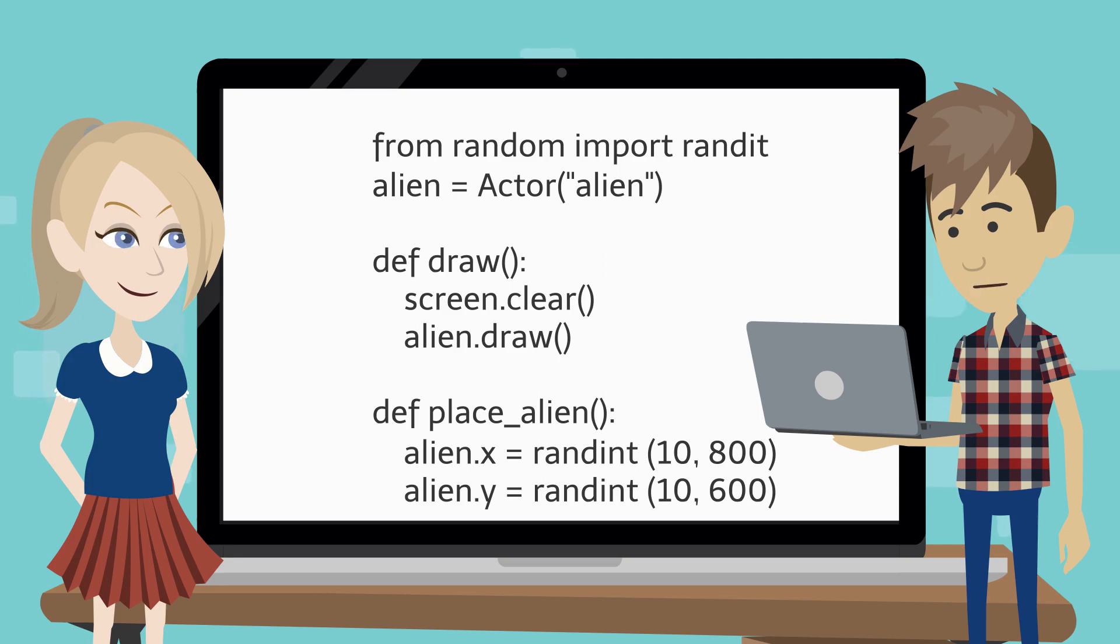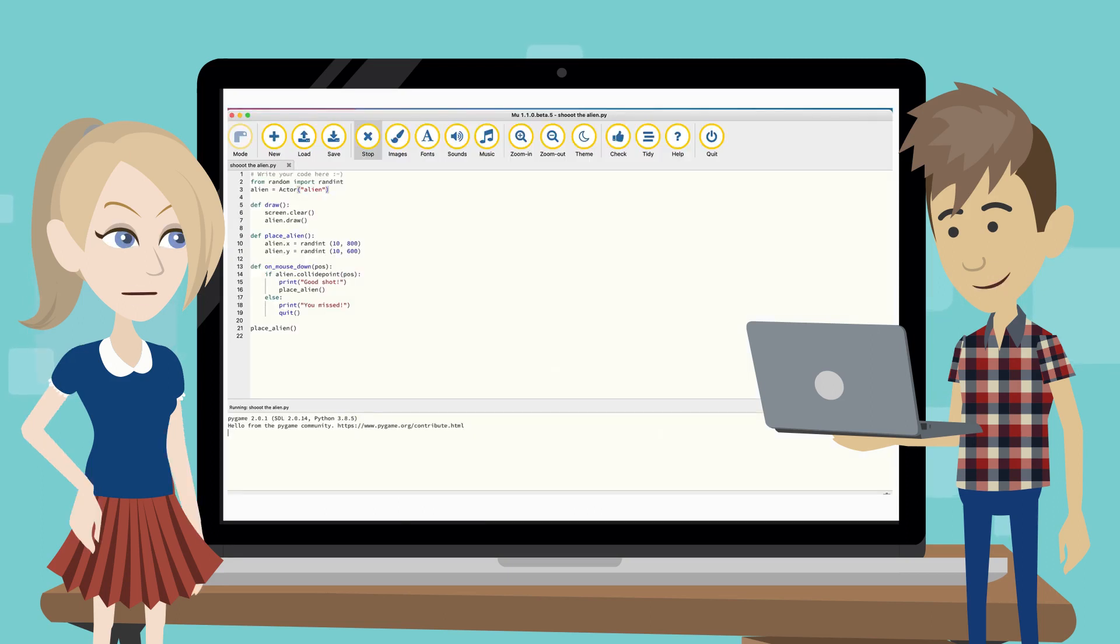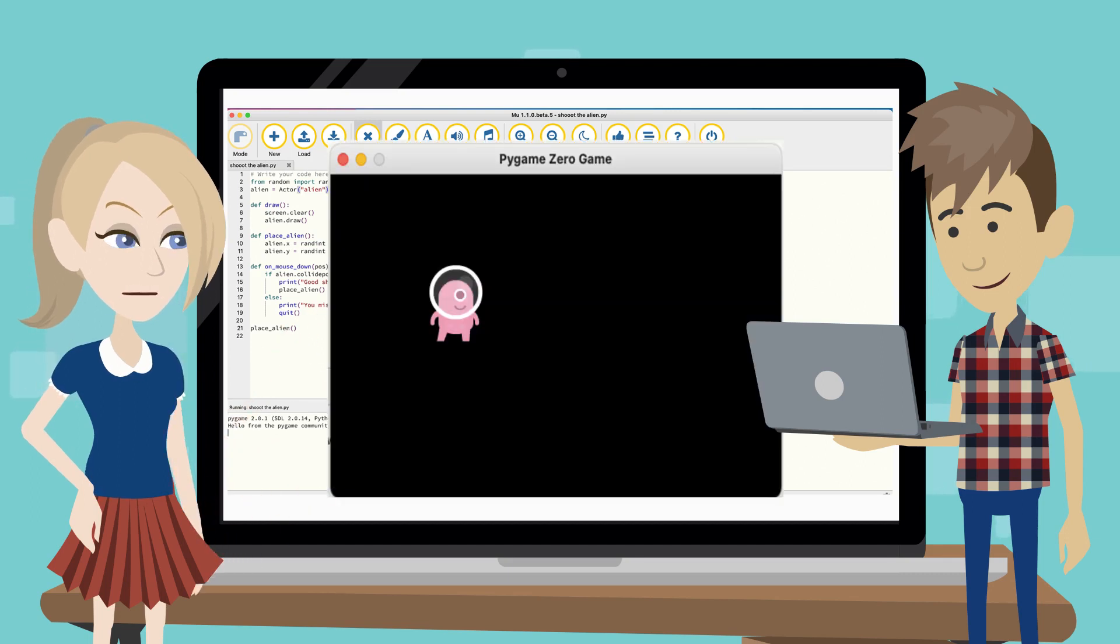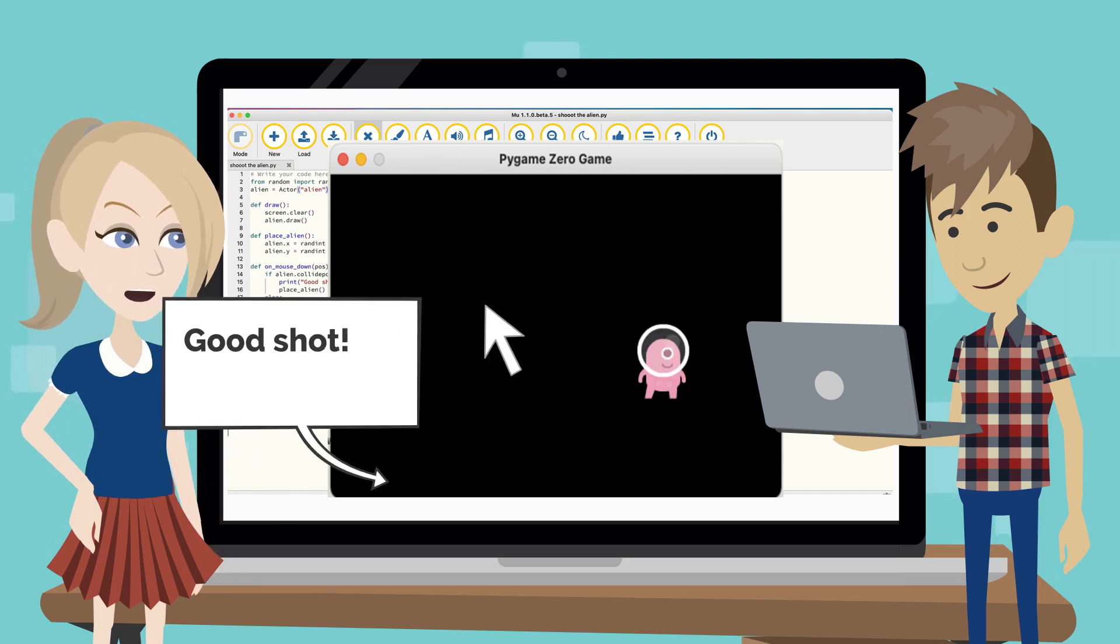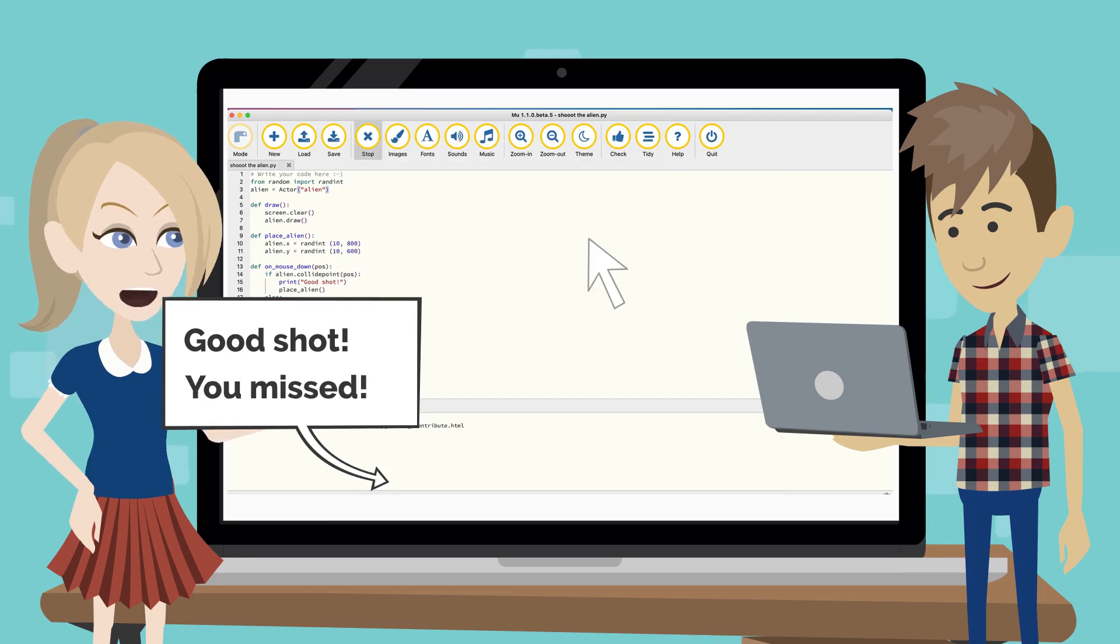It's time to shoot the alien. Alright, save the file and play it. When the game starts, the alien appears at a random point on the screen. If I hit it, a good shot message pops up and the alien appears at another point on the screen. But if I miss, the you missed message pops up and the game is over.